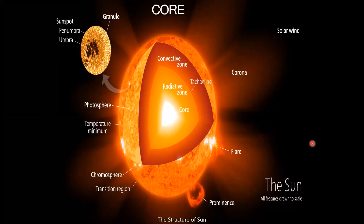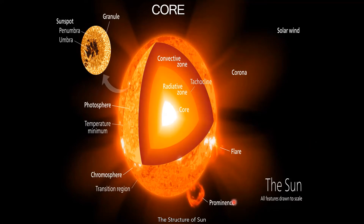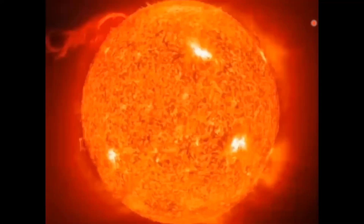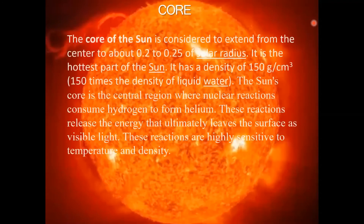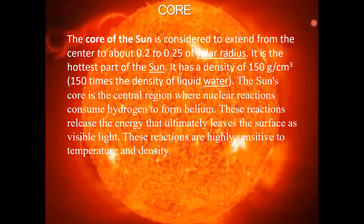The structure of Sun. Core: the core of the Sun is considered to extend from the center to about 0.2 to 0.25 of the Solar radius. It is the hottest part of the Sun. It has a density of 150 grams per centimeter cube.